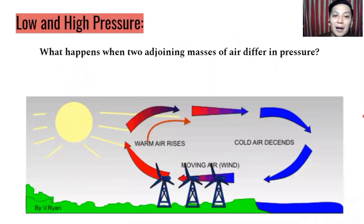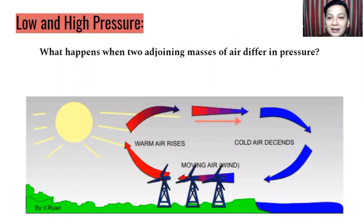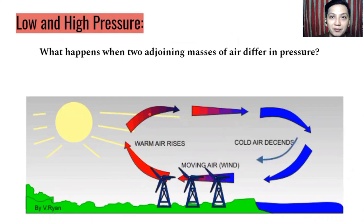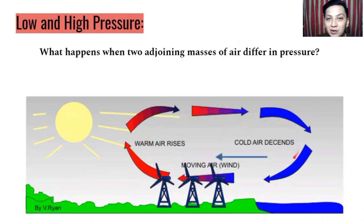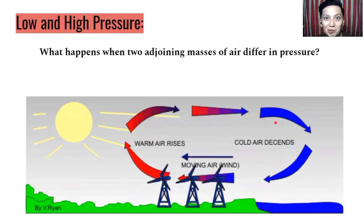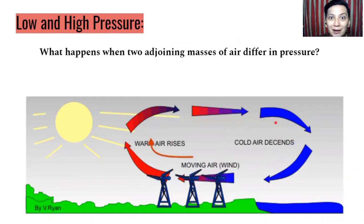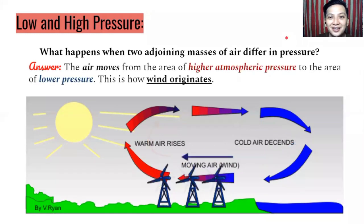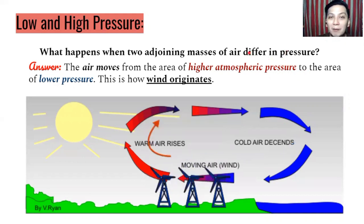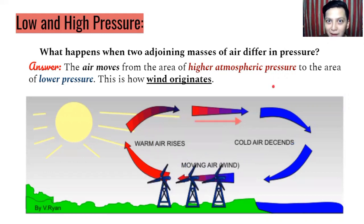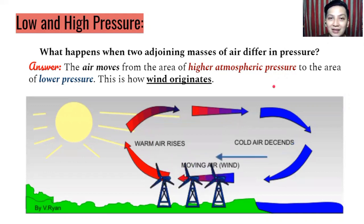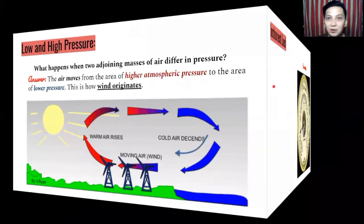What happens when two adjoining masses of air differ in pressure? We have warm air that results in low pressure, while cold air results in high pressure. When air moves from the area of higher atmospheric pressure to the area of lower pressure, this is how wind originates — that is where wind begins. If the two pressures are joined together, that is where wind originates.